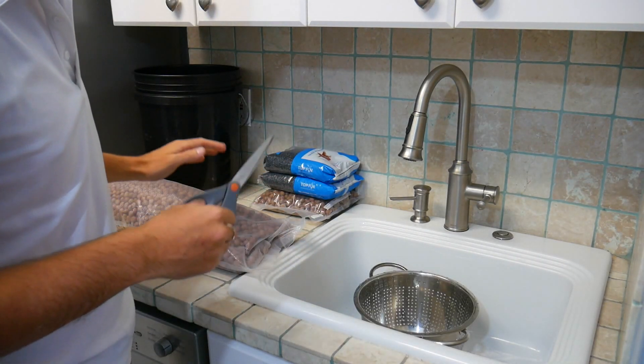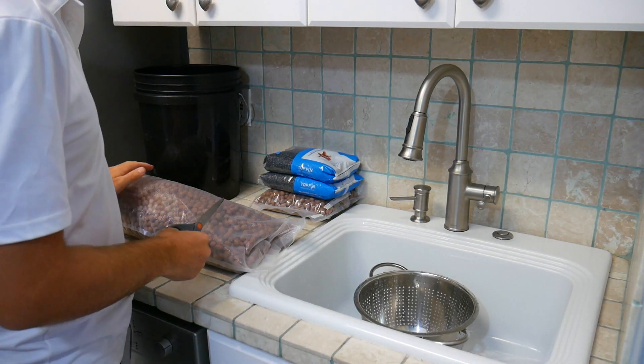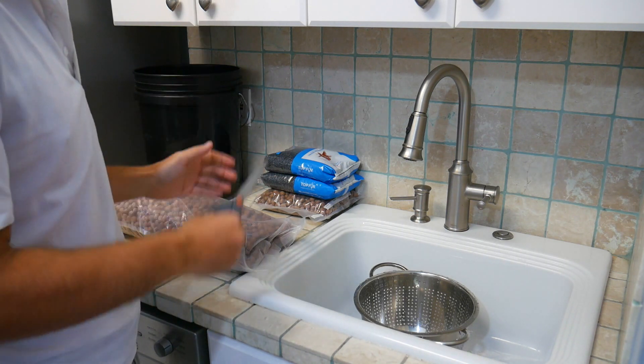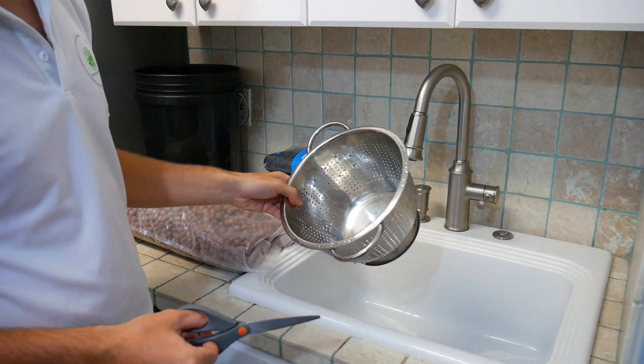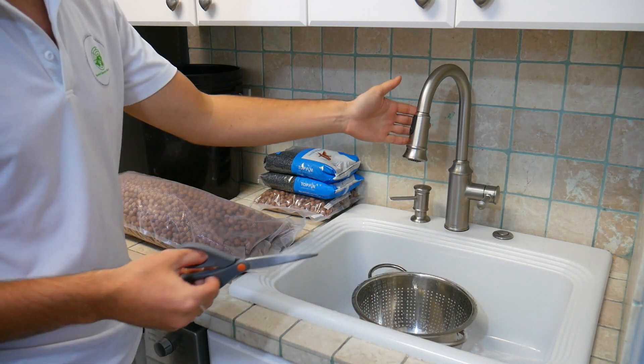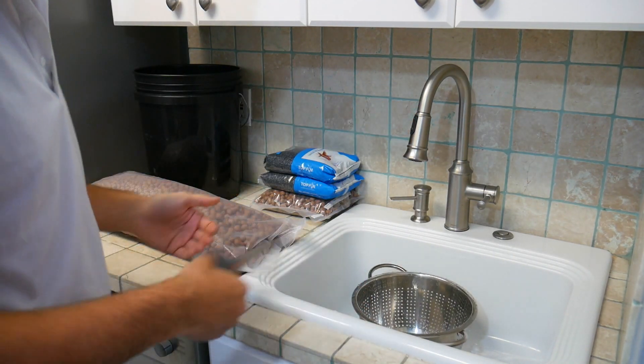So the first step in all this is you want to clean the gravel, because it has dust and random particles that you don't want floating around in your system. The easiest way to do this is get some sort of strainer and a sink and rinse them, and I'm going to show you how I do it.